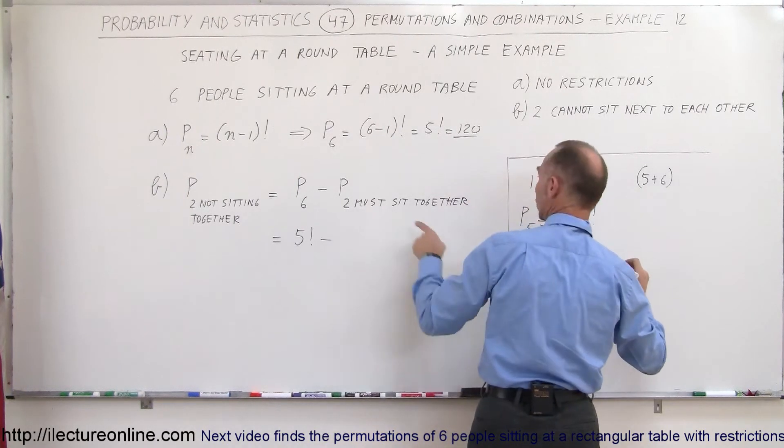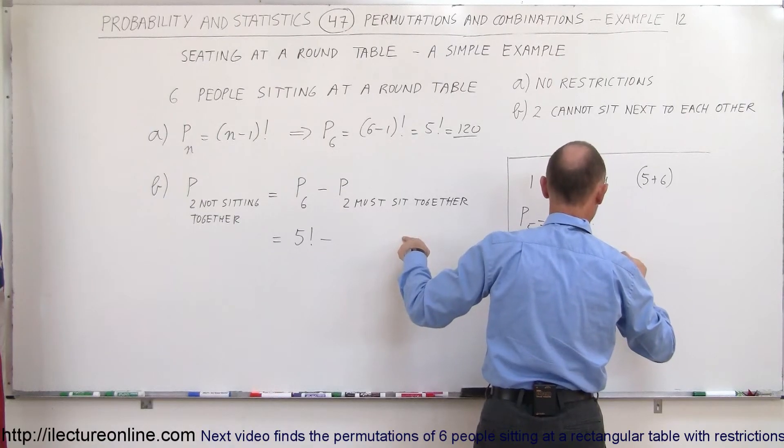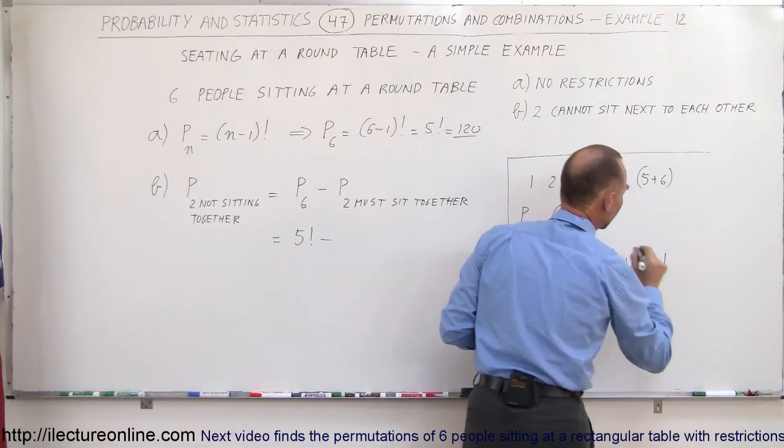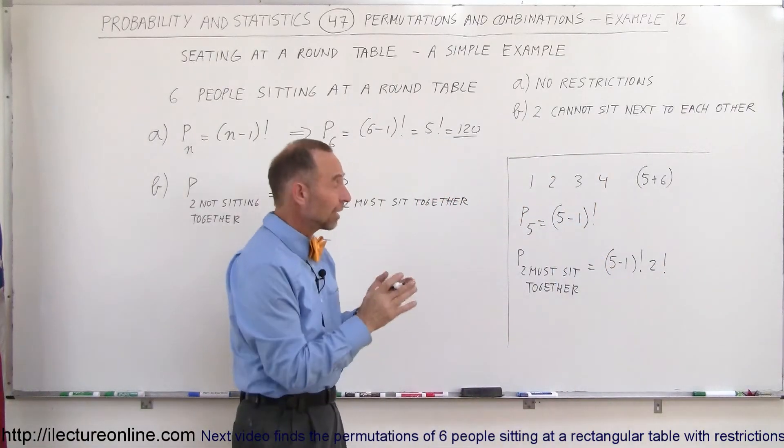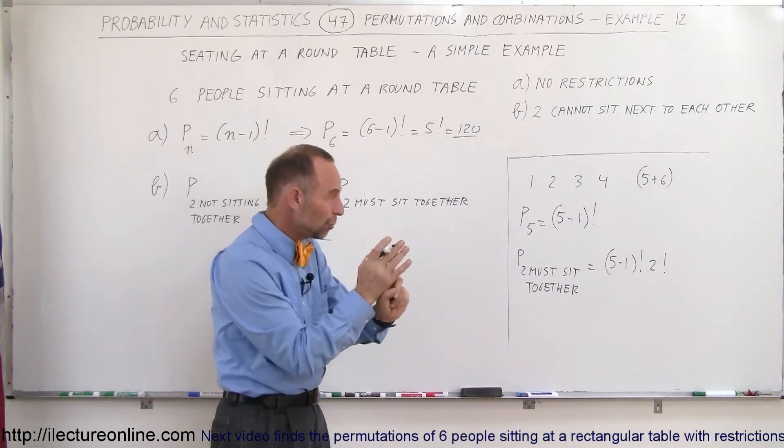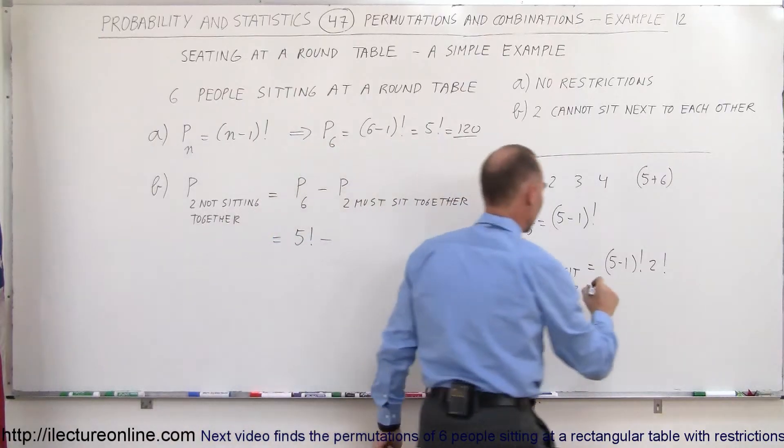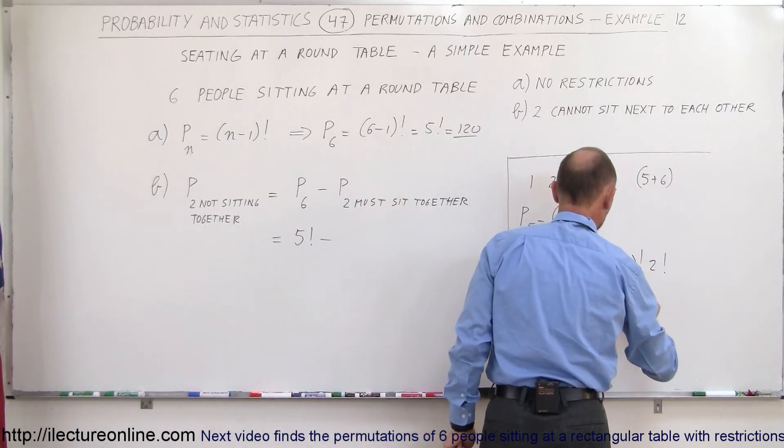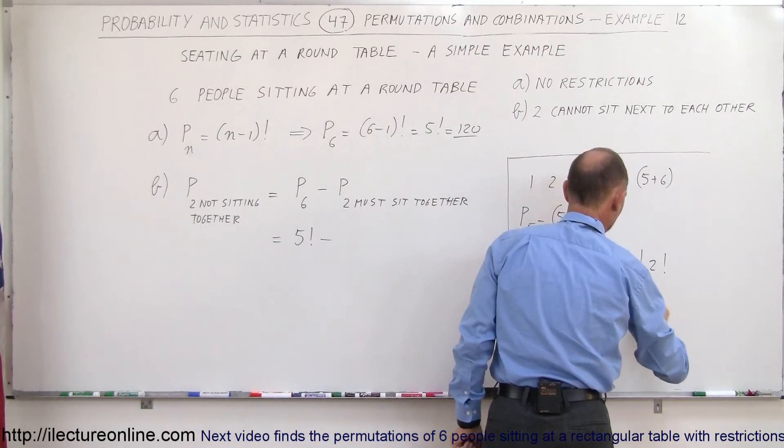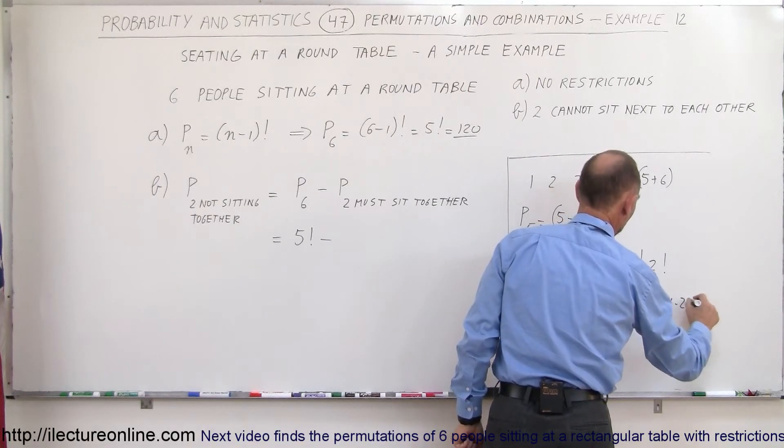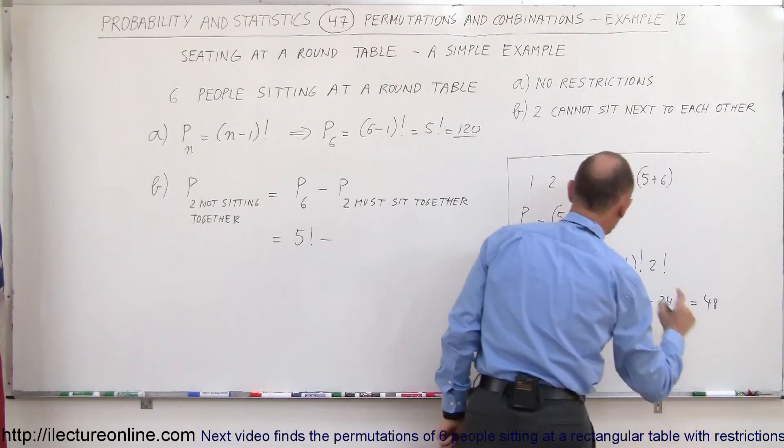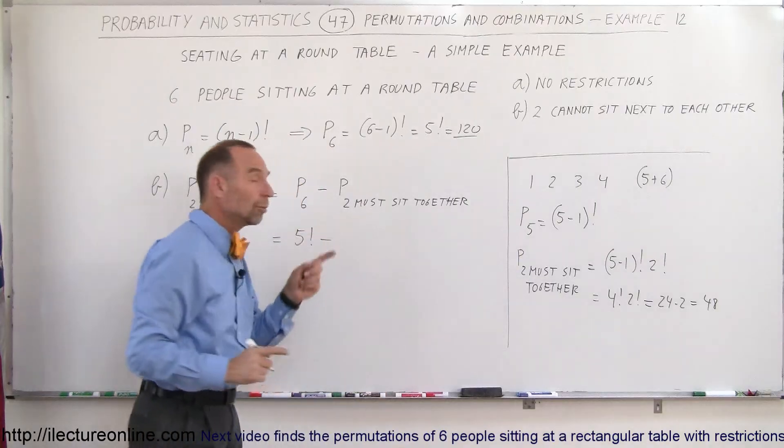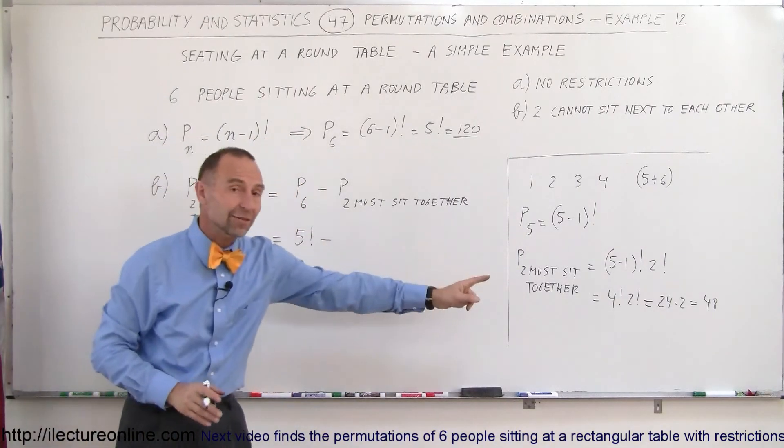That is therefore going to be equal to, in this case, five minus one factorial times two factorial, because we have to account for the fact that that unit of two people can sit in two different ways. So in this way, this is equal to four factorial times two factorial, and four factorial is twenty-four, two factorial is two, that means forty-eight, which means the number of permutations where two must sit together is forty-eight.